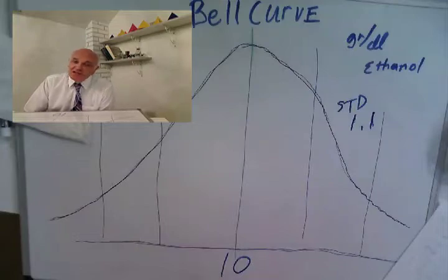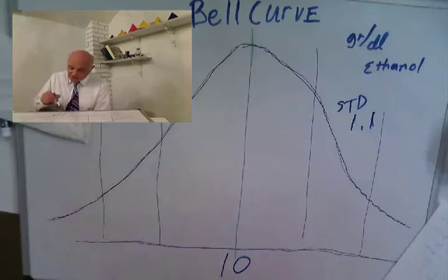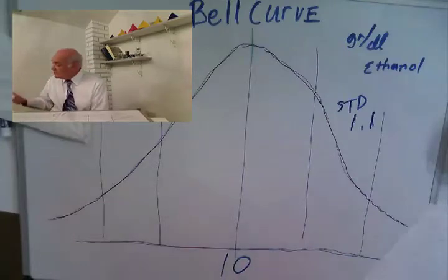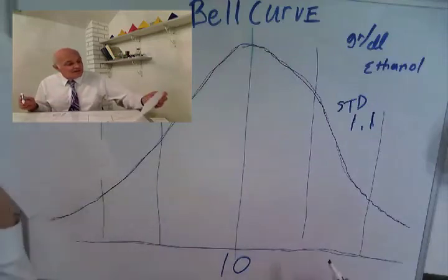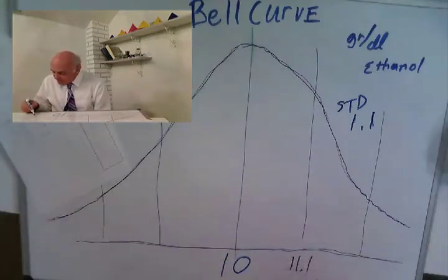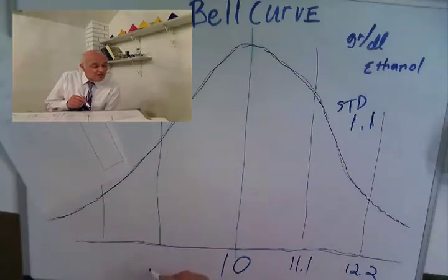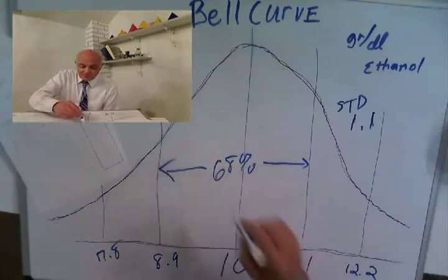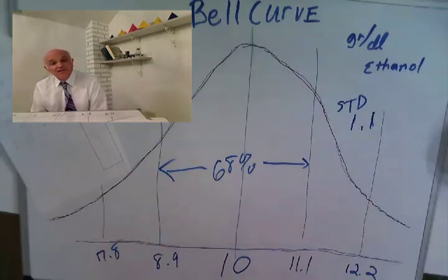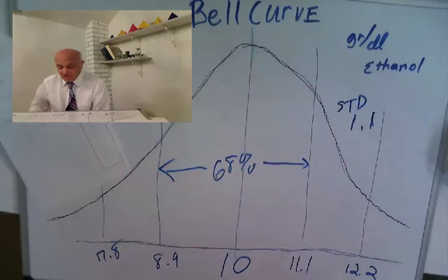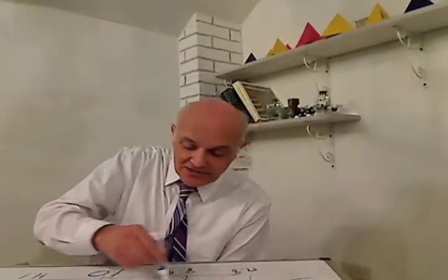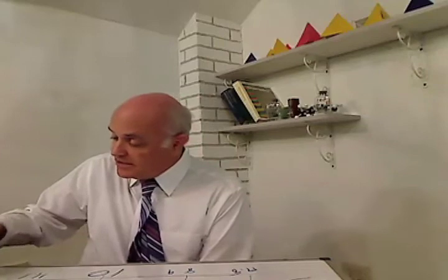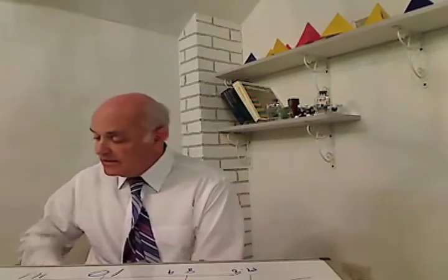The assumption is made that the standard deviation is independent of the quantitation. We run the controls at 10 and get a standard deviation of 1.1. That tells us one standard deviation is 11.1 and 8.9, and two standard deviations are 12.2 and 7.8. So there is a 68% chance it is between 8.9 and 11.1, and a 95% chance it is between 7.8 and 12.2.